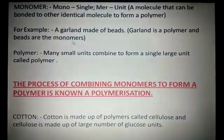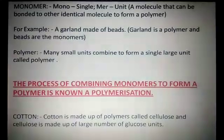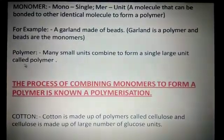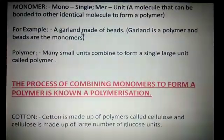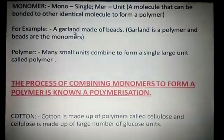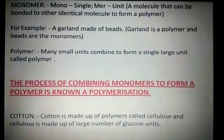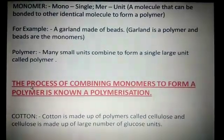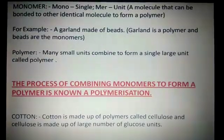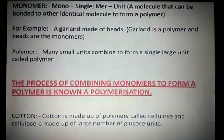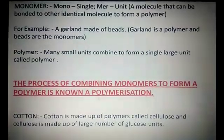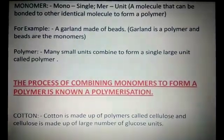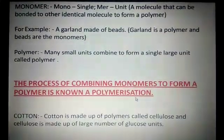Small units means monomer, which I took as the example of beads. Single large unit is your polymer, that is the garland. The process of combining monomers to form a polymer is known as polymerization. Because you are making a polymer, so the process is known as polymerization.